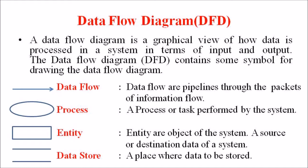Third one is an entity — the entities are objects of the system. A source or destination of data in a system are represented as entities; these are the endpoints of the system and the entities are represented by a rectangular box. The fourth one is a data store, a place where the data is stored, and these data stores or databases are represented by two parallel lines.